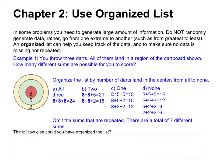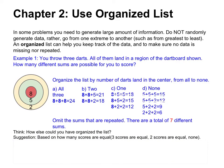A good question for you to think about: how else could you have organized the list? In our example, we listed scores based on how many darts land in the best region of 8. One suggestion is you could organize based on how many scores are equal — like all scores equal, two scores equal, or none of the scores equal.